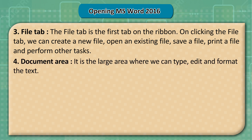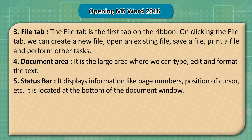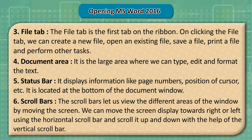4. Document Area: It is the large area where we can type, edit, and format the text. 5. Status Bar: It displays information like page numbers, position of cursor, etc. It is located at the bottom of the document window. 6. Scroll Bars: The scroll bars let us view different areas of the window by moving the screen. We can move the screen display right or left using the horizontal scroll bar, and up and down with the vertical scroll bar.